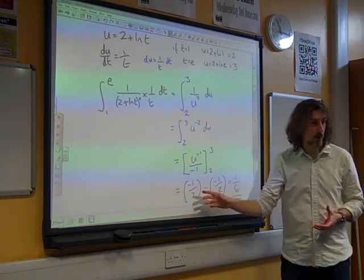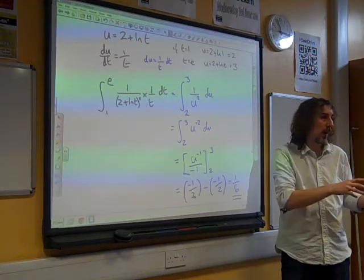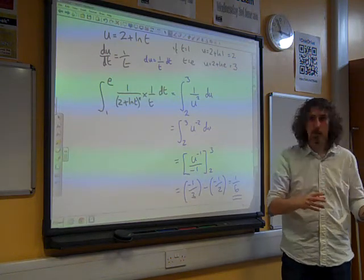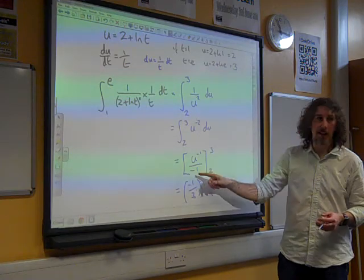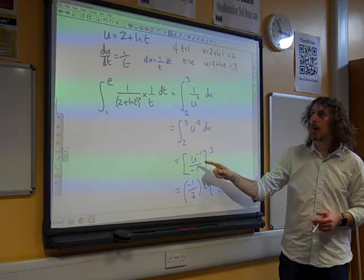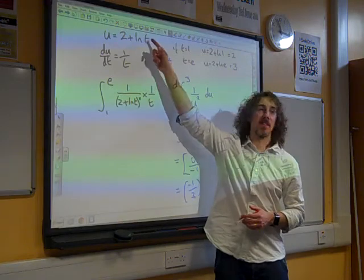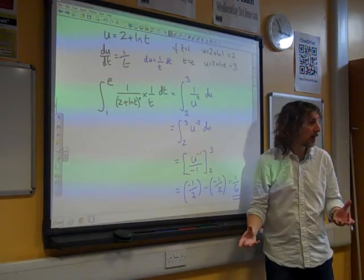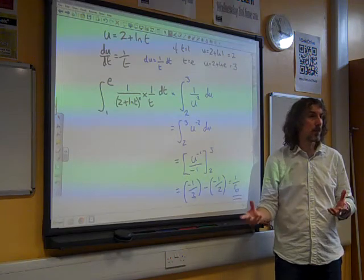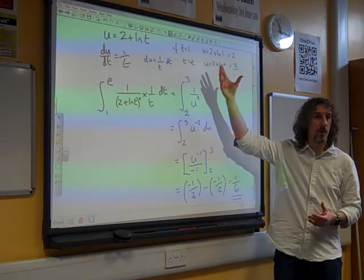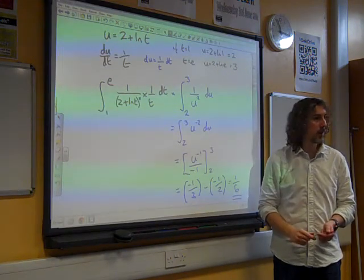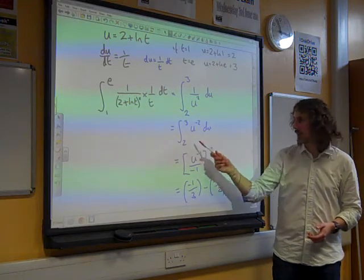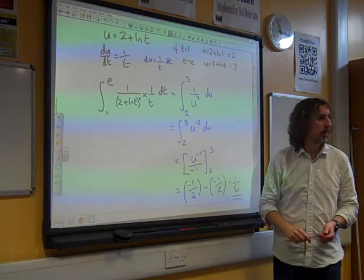And once you've done your integration, undo the substitution again. So do the substitution backwards. So keep it as 1 and e, and once you get to this stage here, write this as minus 1 over (2 + ln t), and then use the original limits. And that will give you the same answer. But I think it's often more straightforward to change the limits and work through with the new limits. Especially if you - you know, I mean, that's really nice to stop that in, isn't it? There we are.